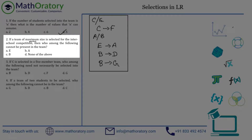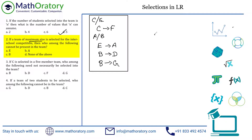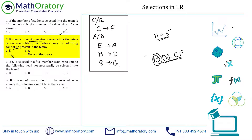Second question: if a team of maximum size — and from the previous question we know the maximum team size is N equal to five — is selected for the inter-school competition, then who among the following cannot be present in the team? We started with the B, D, G, C, F combination. Let's focus on the options: E, A, B. B is already ruled out as an answer since B is present in that combination.